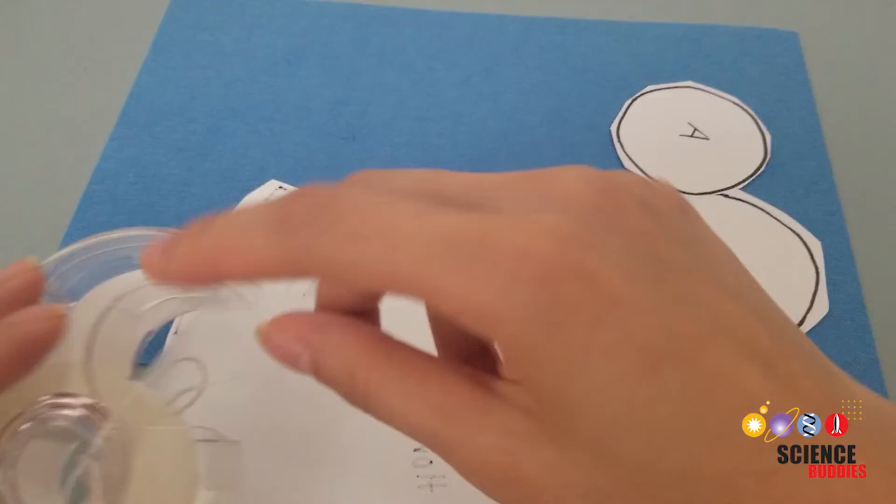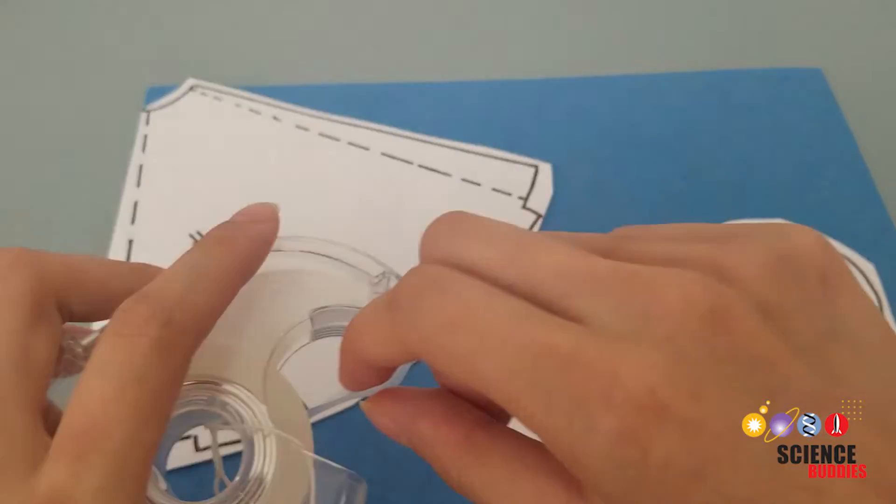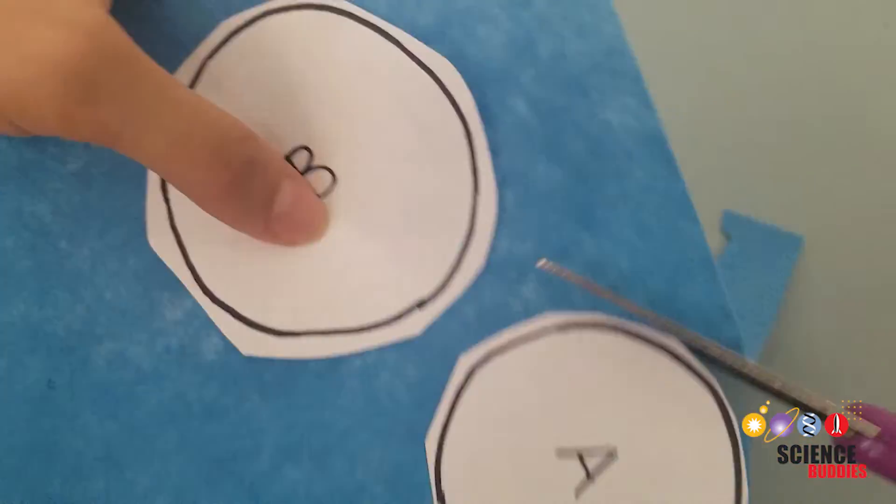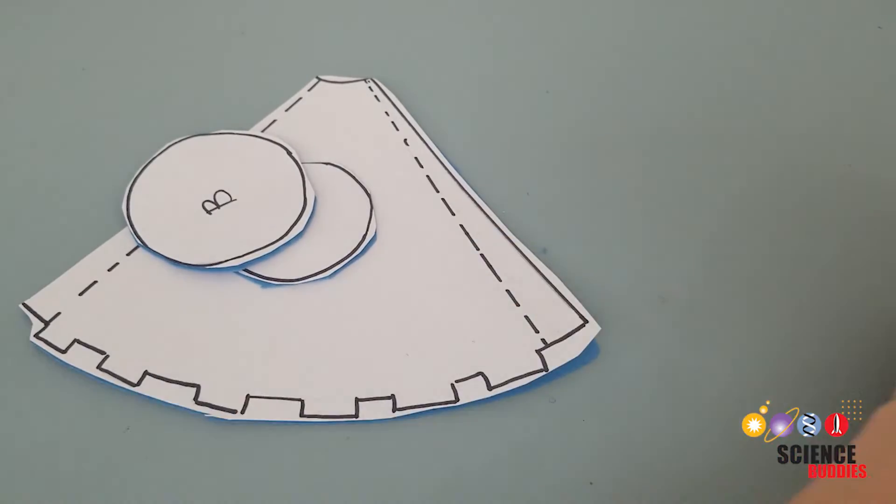Using double-sided tape or rolled up one-sided tape, tape the shapes to the felt sheet that you want to use for the horn. I'll be using blue. Cut out the shapes from the felt. You will only need your horn pieces and your A piece for now.